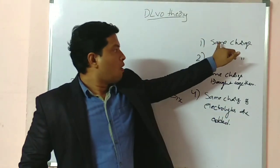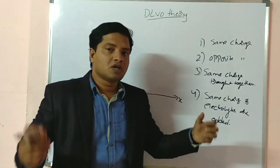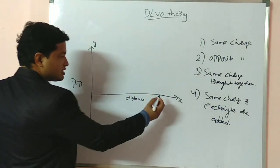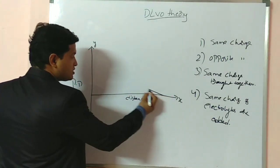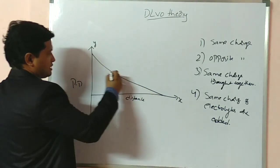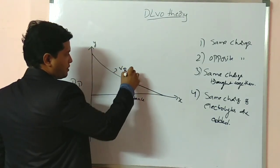The first possibility: what happens when the particles having same charge are brought together? Obviously, their repulsive potential increases. This is represented by repulsive potential on the graph.